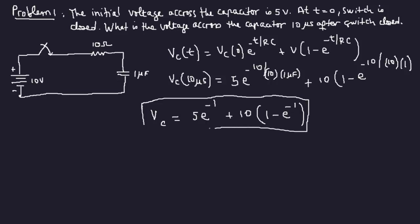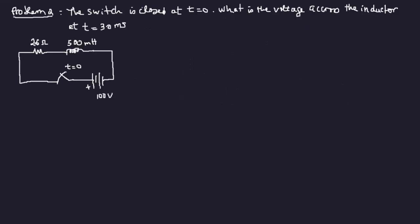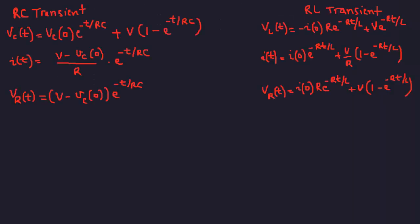The answer is 8.16 volts. So we just need to find out what's what and what the question is asking, and plug it in. Problem number two: the switch is closed at t equals zero. What is the voltage across the inductor at t equals 30 milliseconds? So we're dealing with inductors here, RL transients.